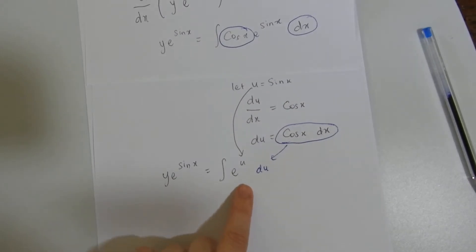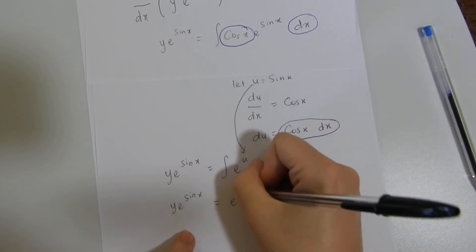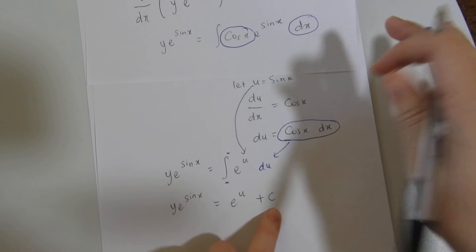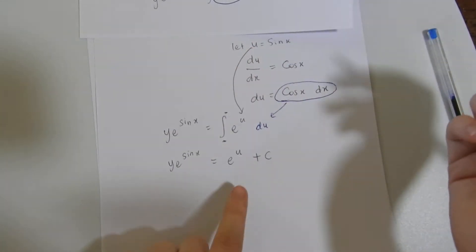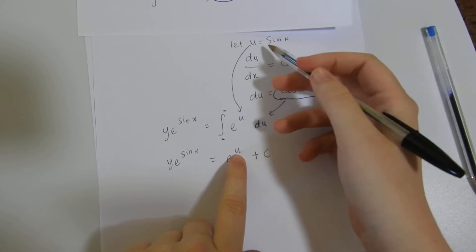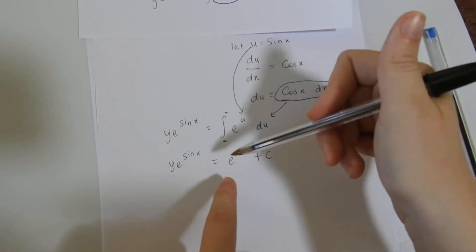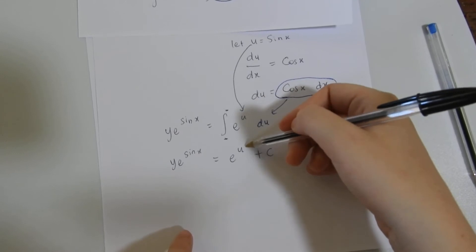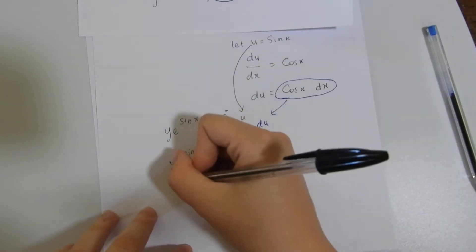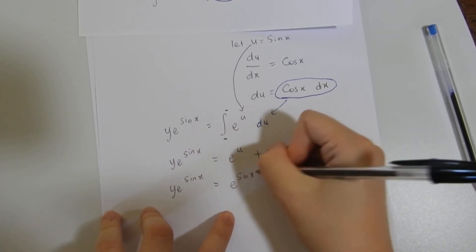This is a simple integration of just an exponential. So we have y·e^(sin x) = e^u + c. It's plus c because there are no limits here, so we know there has to be a constant. From here we need to back-substitute — we replace u with sin(x). So we've got y·e^(sin x) = e^(sin x) + c.